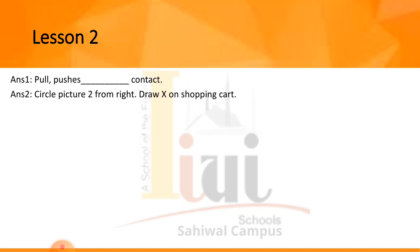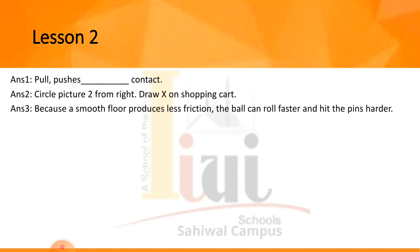Question number 3: why do bowling alley owners keep the lanes smooth and polished? Because a smooth floor produces less friction. We discussed in our previous lecture how friction affects motion. Because the floor is smooth and friction decreases, the ball can roll faster and hit the pins harder.